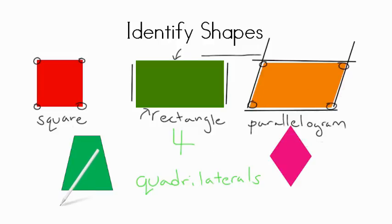Next here we have what's called a trapezoid. A trapezoid also has four sides, but it does have a little difference from our parallelogram here. It has one set of lines here that are not parallel.